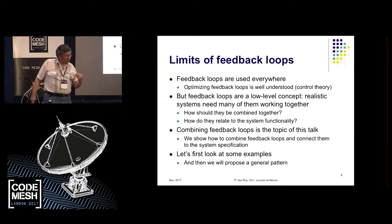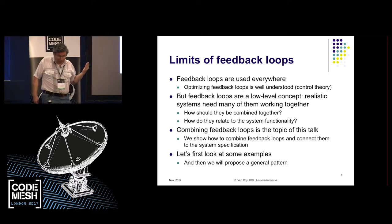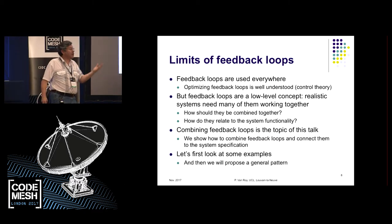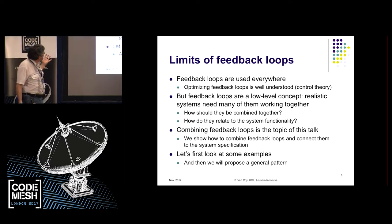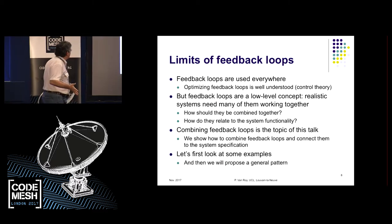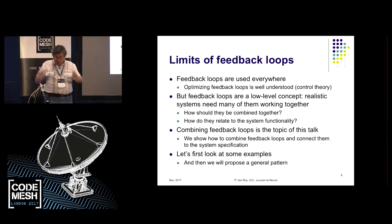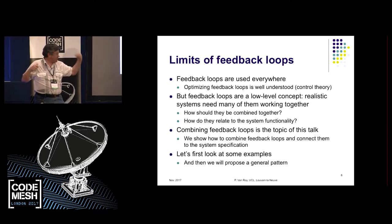Optimizing systems based on feedback loops is actually very well understood — there's control theory for that. There's a famous book by Hellerstein, 'Feedback Loop Control of Computing Systems,' which is very nice for optimizing one loop. At the very end, there's an advanced chapter with two feedback loops. But feedback loops are a very low-level thing; you need very many. The point is, how do you connect them together, and how do they relate to the functionality of the system you want to build?